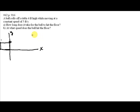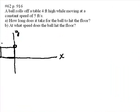In this segment, we're going to look at an example of projectile motion. In this example, we have a ball rolling off of a table that's 4 feet high while moving at a constant speed of 5 feet per second.